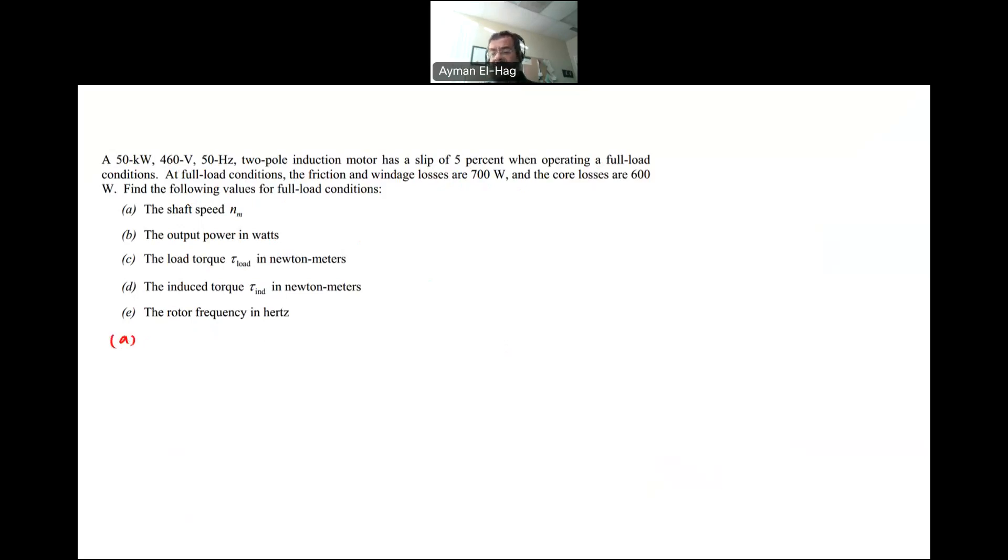To find the shaft speed, we have first to find the synchronous speed, which is the speed of rotation of the magnetic field, which is constant in the induction motor, and this we call it Nsynchronous, or sometimes we call it NS for short, is equal to 120 times the frequency, the electrical frequency, divided by the number of poles, and this is equal to 120, frequency is 50, divided by 2, and this will give me 3000 RPM.